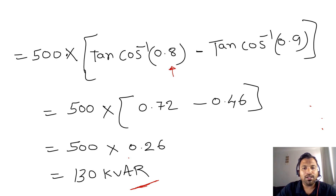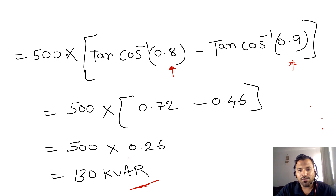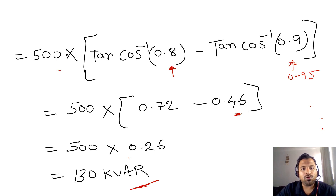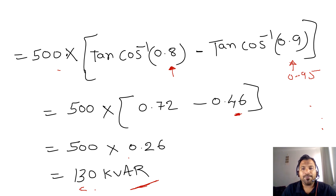For example, in a DEWA or similar exam, if they require a power factor of 0.95, this multiplying factor will change. So remember the formula: kVAR = Load × [tan(cos⁻¹ of old power factor) − tan(cos⁻¹ of new power factor)]. If you know this formula, it is very easy to find out the total kVAR required. That completes Step 1.